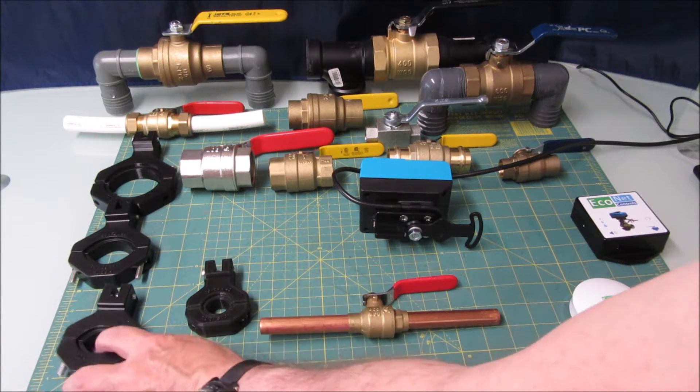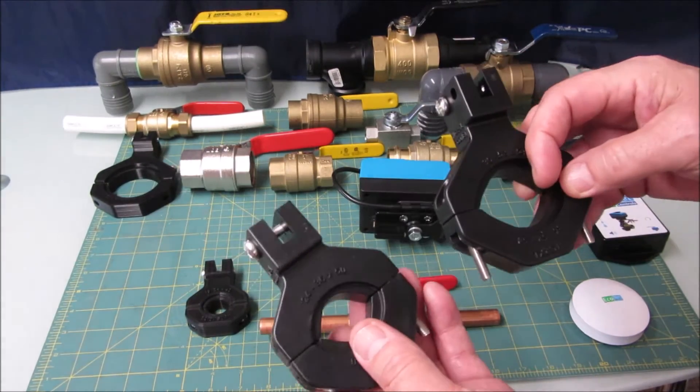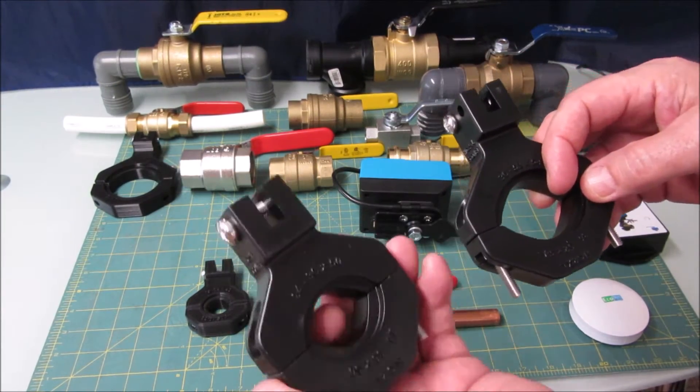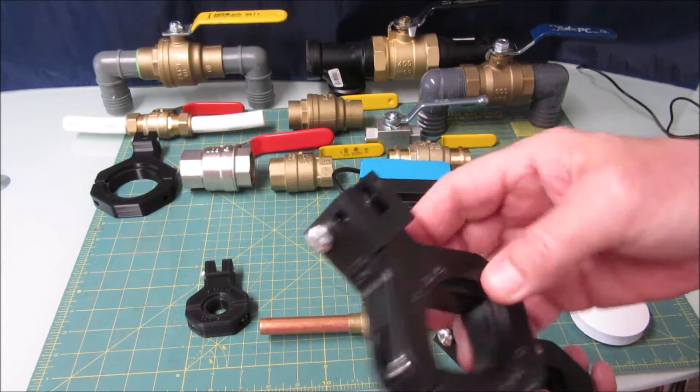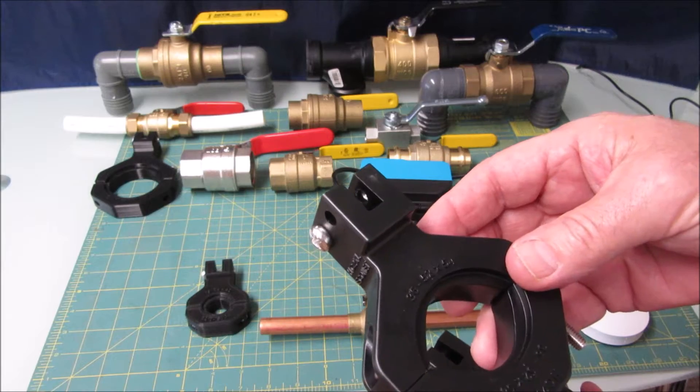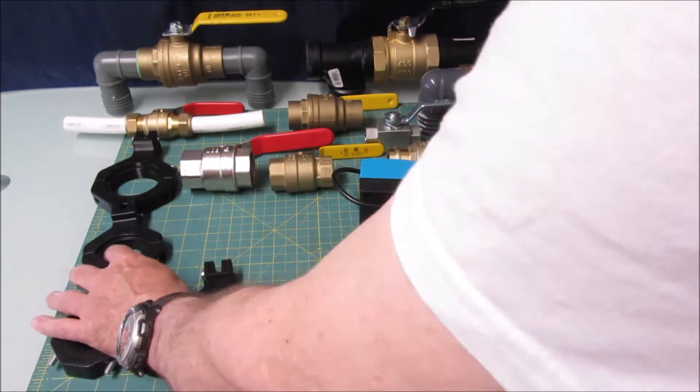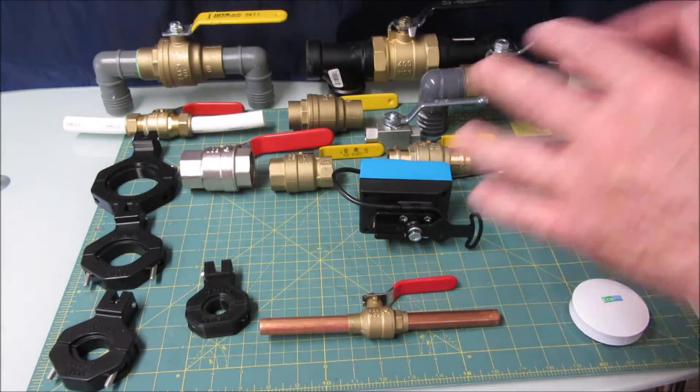The Bulldog standard mounting kit includes these two brackets: the HC-2L for half inch and one inch valves, and the HC-2XL for various one inch and up to 1.5 inch valves. So basically, the standard kit covers most valves.